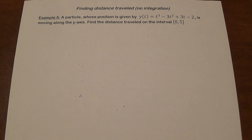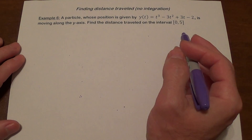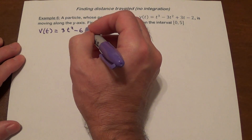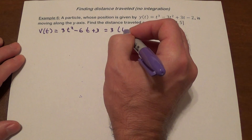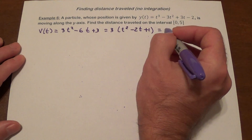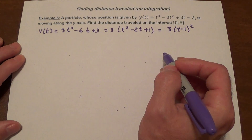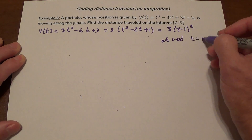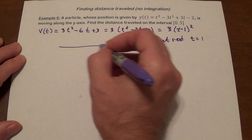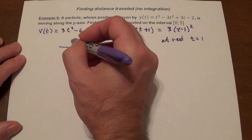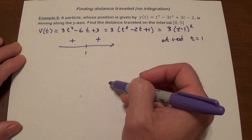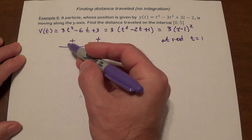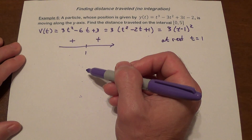Our last example: a particle moving along the y-axis. The velocity function is 3t² - 6t + 3. Factoring out 3 gives t² - 2t + 1, which equals 3(t - 1)². The particle is at rest at t = 1. On the sign chart, the velocity is positive on both sides of t = 1 — there is no sign change — so there is no change in direction for the particle.